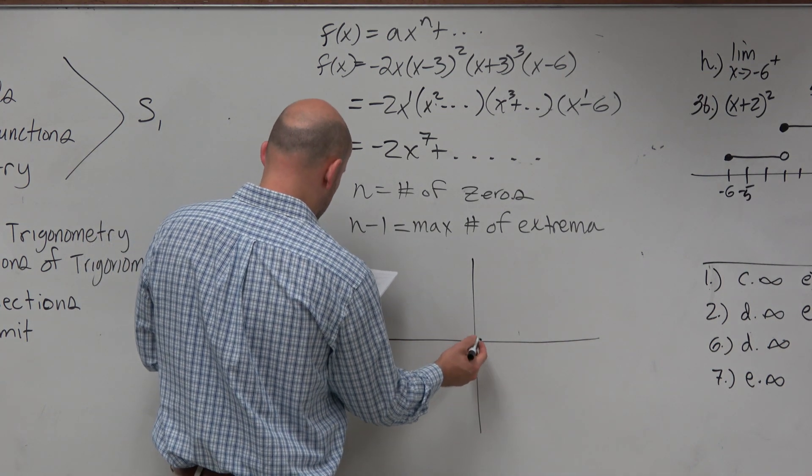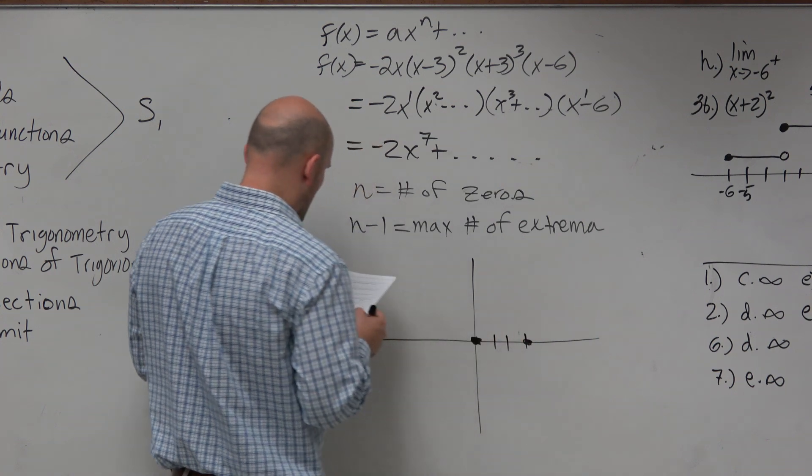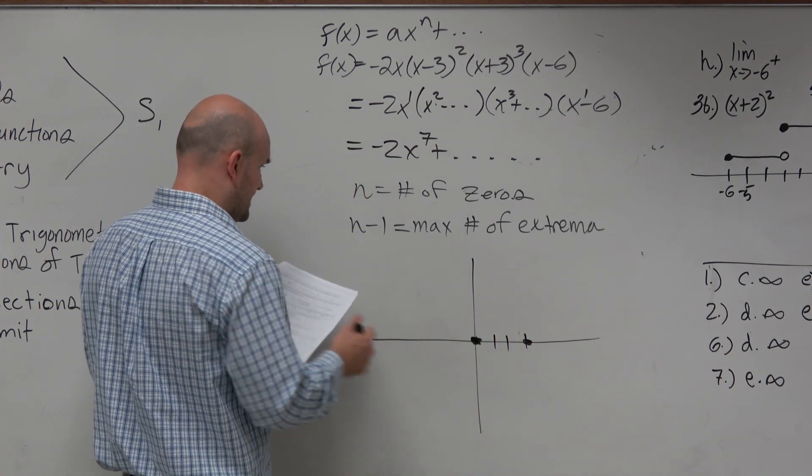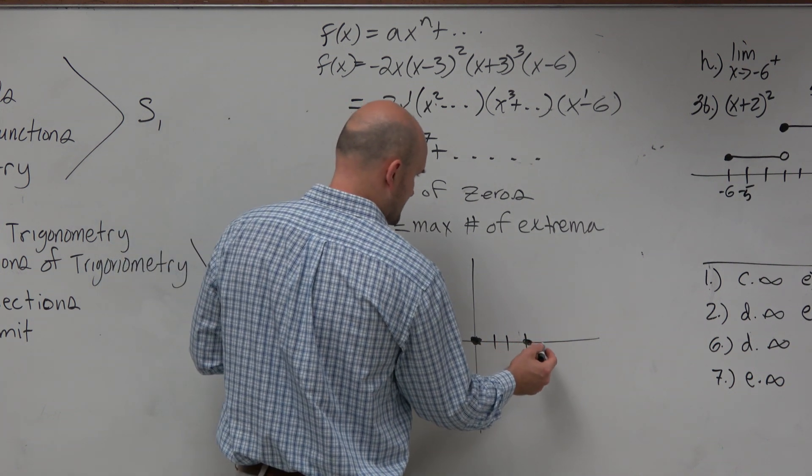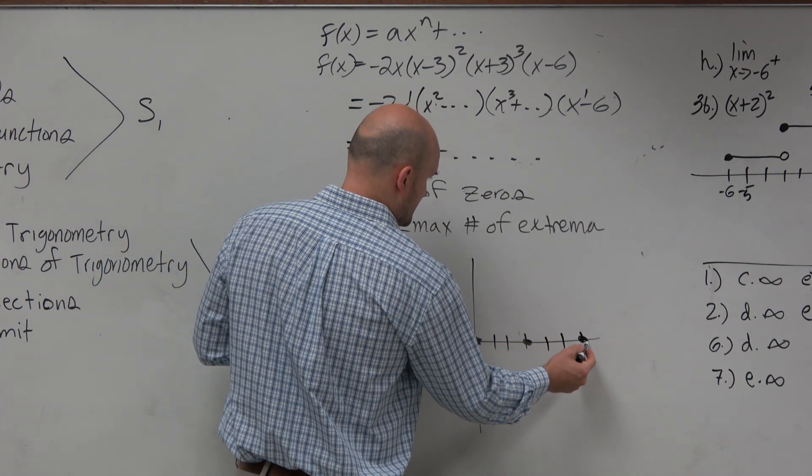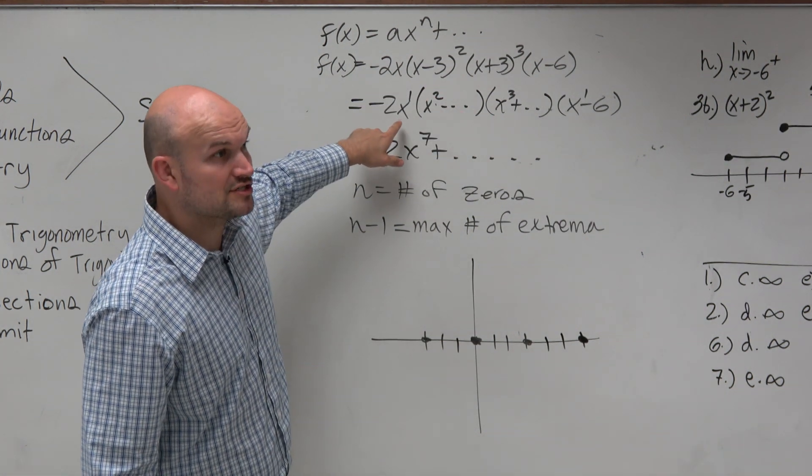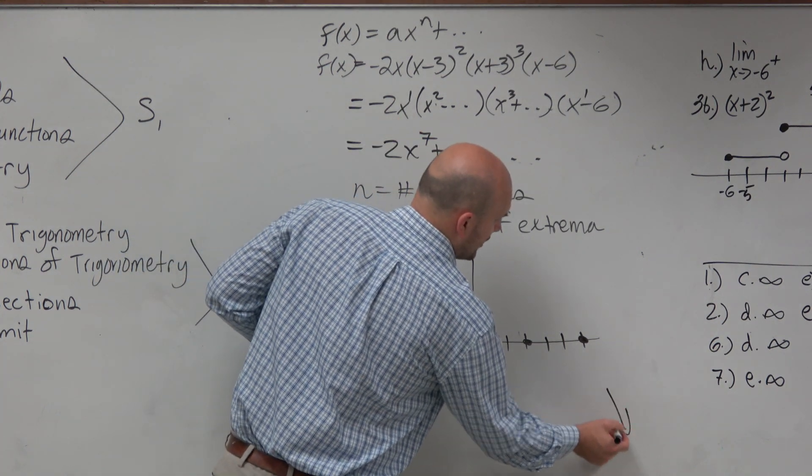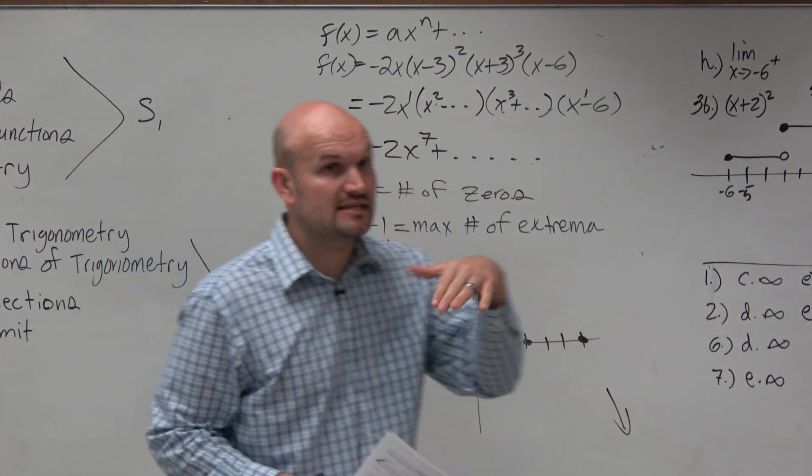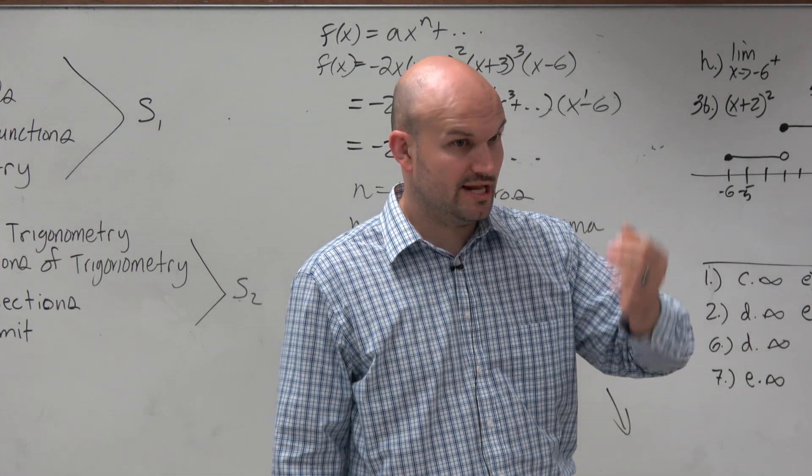Our zeros are at 0, 3, negative 3, and 6. Wouldn't you guys agree? Looking at that, that is our zeros. We did figure out the end behavior. So we did have to do that. That's good. So we still need to understand that's going to rise to the left, fall to the right. But we need to understand the multiplicity. Because just because something crosses doesn't mean it's an extrema.